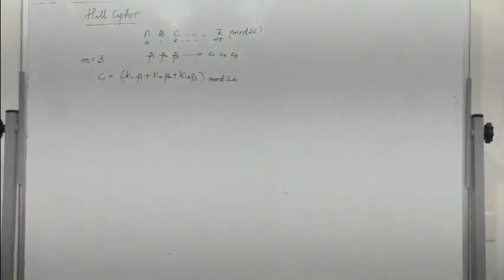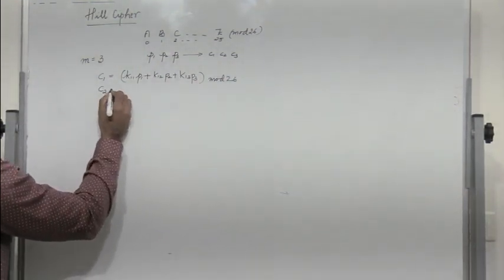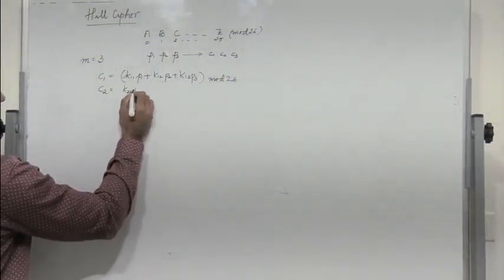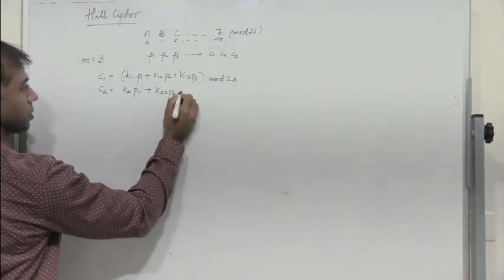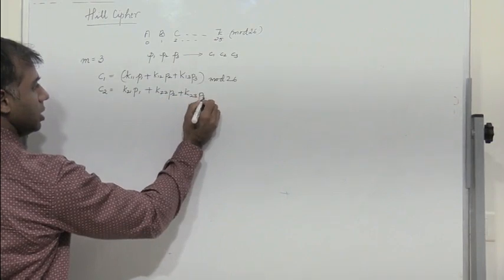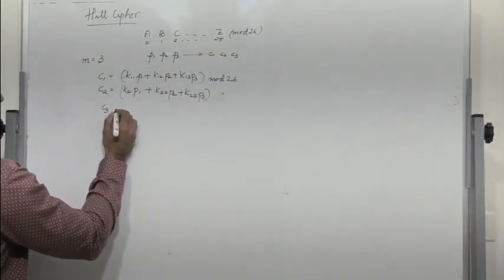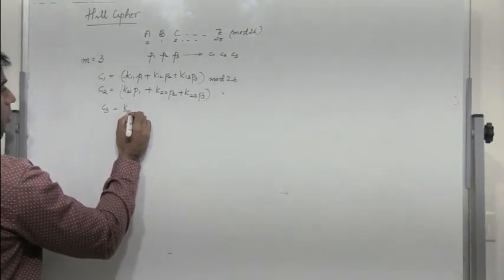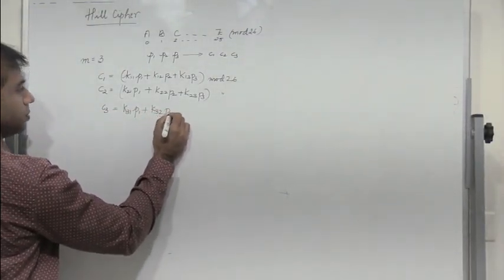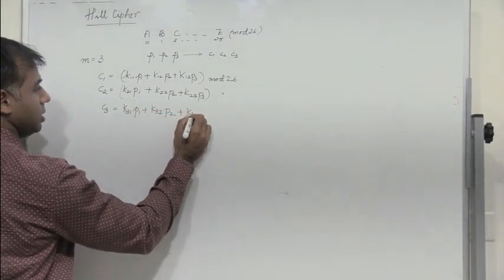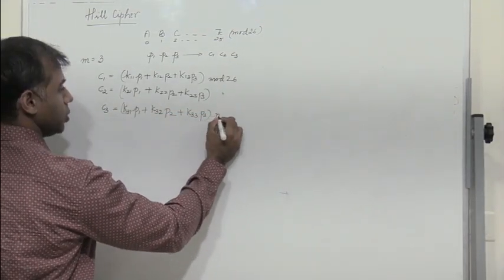Assuming 26 letters a to z, we operate in mod 26. Similarly, c2 = k21·p1 + k22·p2 + k23·p3 (mod 26), and c3 = k31·p1 + k32·p2 + k33·p3 (mod 26).